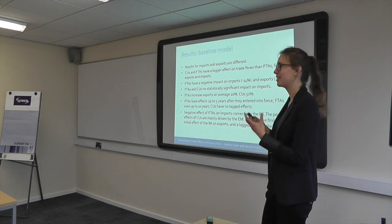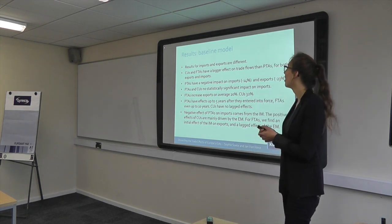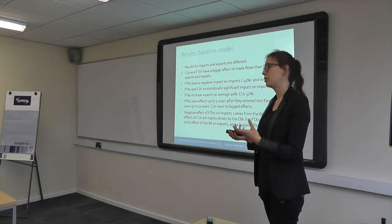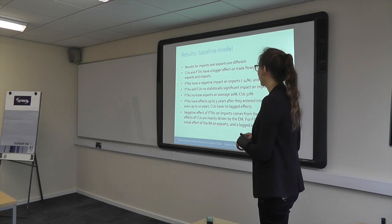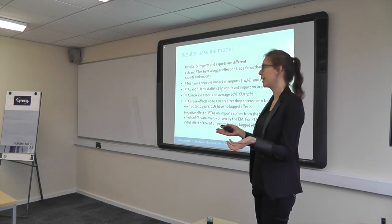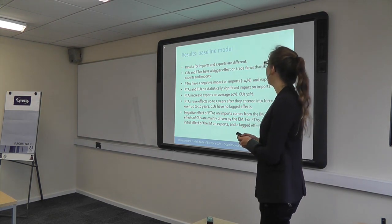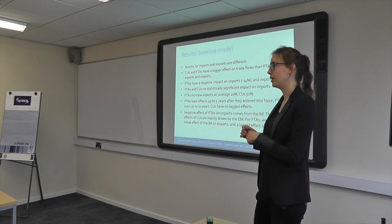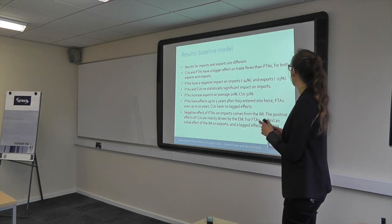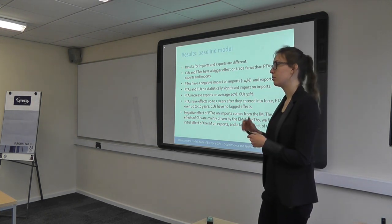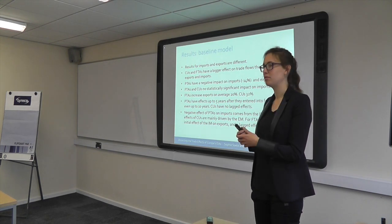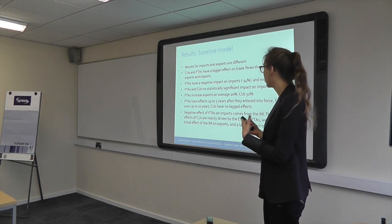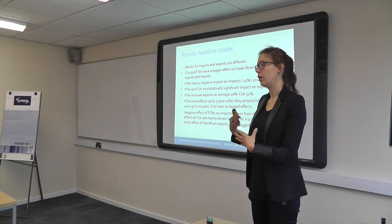Now the results — the most important part. When we look at results for imports and exports, they are different, which is quite logical since trade agreements have different stipulations for each. We see that customs unions and free trade agreements have a bigger effect on trade flows than preferential trade agreements. This holds for both imports and exports, consistent with findings already in the literature. It's also logical that deeper integration has a larger effect on trade flows.